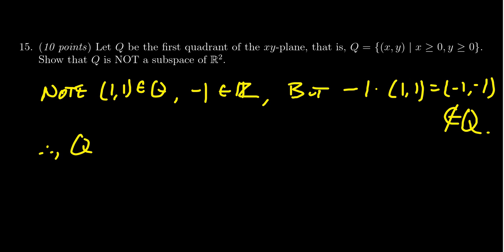And so therefore we can say Q is not a subspace. Now there are three things required to be a subspace. To show that it's not a subspace, we only have to provide a counterexample to one of the three axioms.